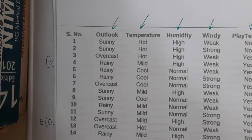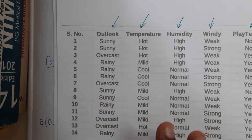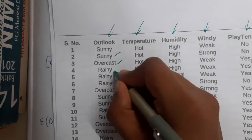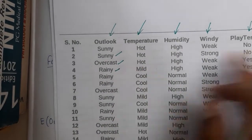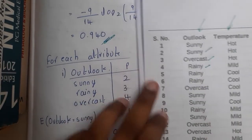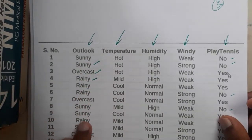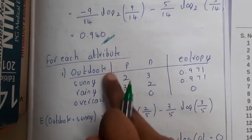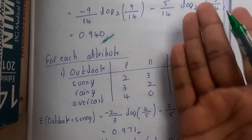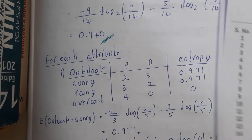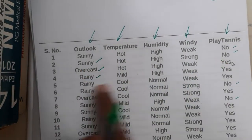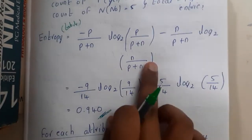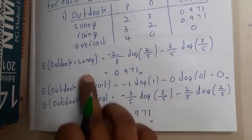Starting with outlook, which has three values: sunny, overcast, and rainy. Count the positives and negatives for each — for example, in sunny there are only two positives. Fill the table, then use the entropy formula and find the entropy for each value. A trick: whenever one of them is zero, directly write zero; if both are equal, directly write one. Once you have the entropies, calculate the information gain.